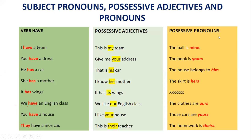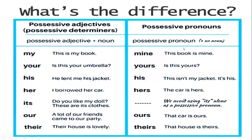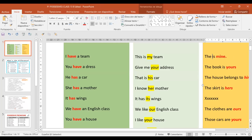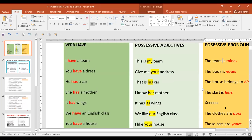La otra forma es utilizar los adjetivos posesivos: my, your, his, her, its, our, your, and their. And the other is to use possessive pronouns — ya dijimos que los possessive pronouns solo son para enfatizar. Por ejemplo: I have a team, this is my team — and if I want to emphasize even more, I say 'the team is mine'. Estoy siendo enfática — reafirmo que el equipo es mío. Entonces los possessive pronouns tienen una función más contundente, para reafirmar la pertenencia de algo.